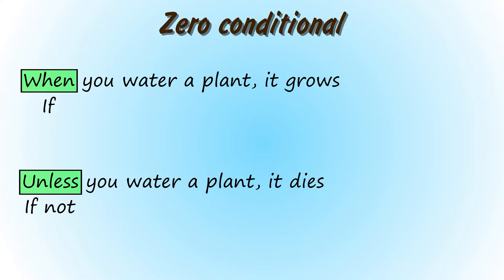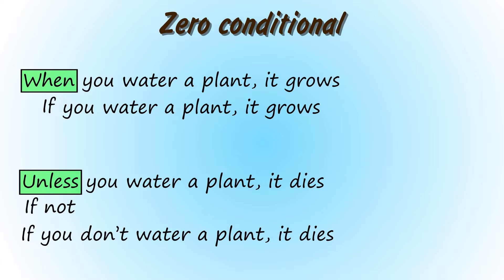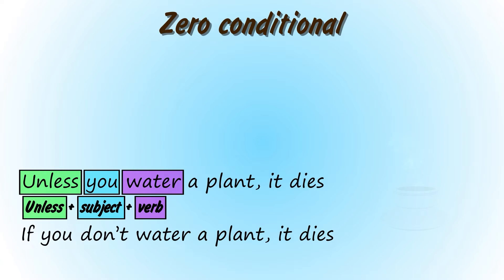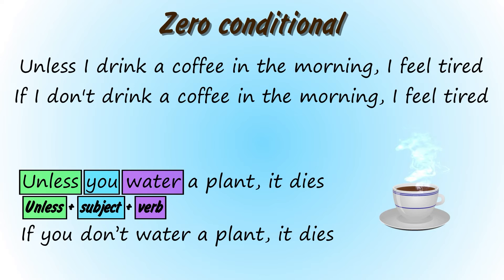So, when you water a plant, it grows — that's the same as if you water a plant, it grows. But unless you water a plant, it dies. Unless represents the negative form of the verb, and we can make the sentence with unless plus subject plus verb. For example, unless I drink a coffee in the morning, I feel tired — and that means the same as if I don't drink coffee in the morning, I feel tired.